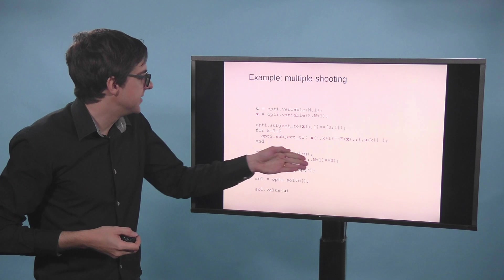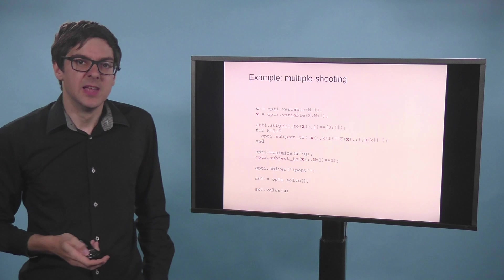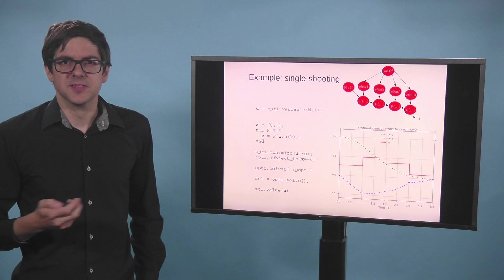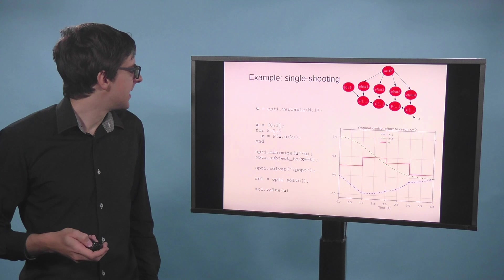The objective stays the same. And the constraints now relate to not just x, but only the last column of it. And you will get the exact same picture as you get here. But it has different numerical properties. It solves faster. Okay. So this is a recipe for multiple shooting.